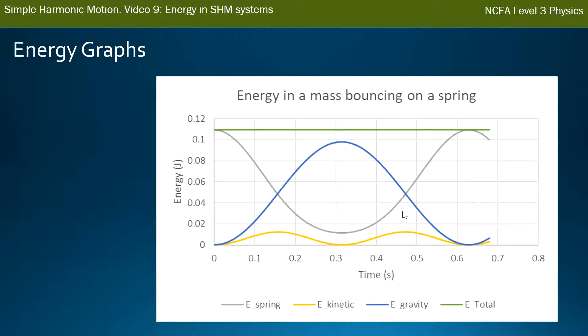So as that gravitational energy increases, the gray one, which is the spring energy, decreases. And you should try and pause the video and work out what's happening with the kinetic energy. Why that does two peaks during this, as opposed to the gravitational energy which only does the one peak.